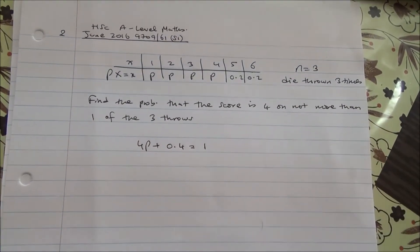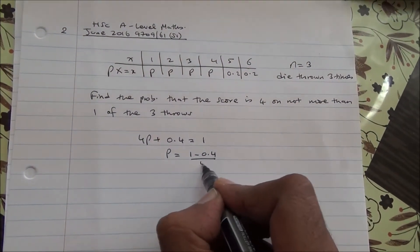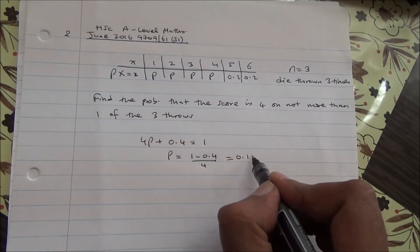The total probability should equal 1. Therefore, p is going to be 1 minus 0.4 divided by 4, which is 0.15.